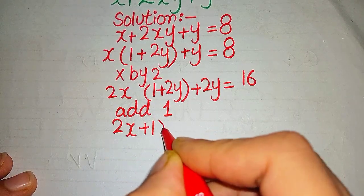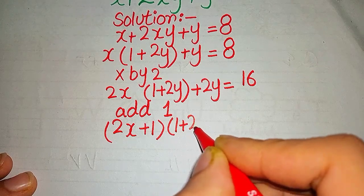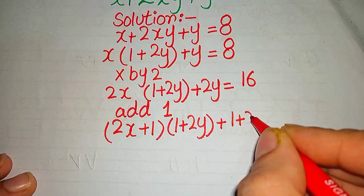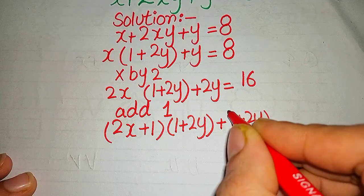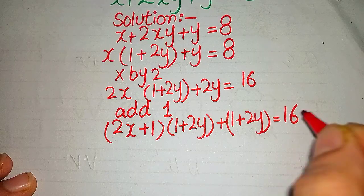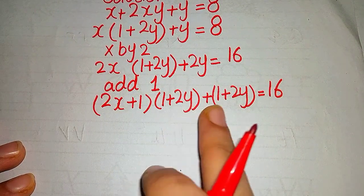Similarly, 2x + 1 (1 + 2y) + (1 + 2y) = 16. Now we can see that (1 + 2y) is common in all these terms.